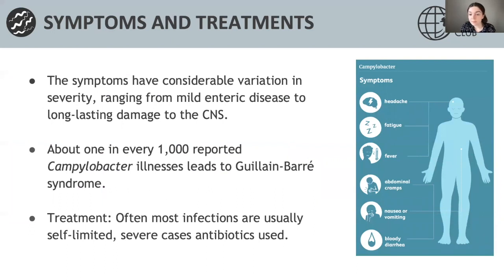In terms of the symptoms of Campylobacter, when someone gets infected they have a considerable variation of severity, ranging from mild disease which can include symptoms such as fatigue, abdominal cramps, bloody diarrhea, nausea and vomiting, but it can also result in more long-lasting damage to the central nervous system. There is also evidence that asymptomatic carriage is known to exist.